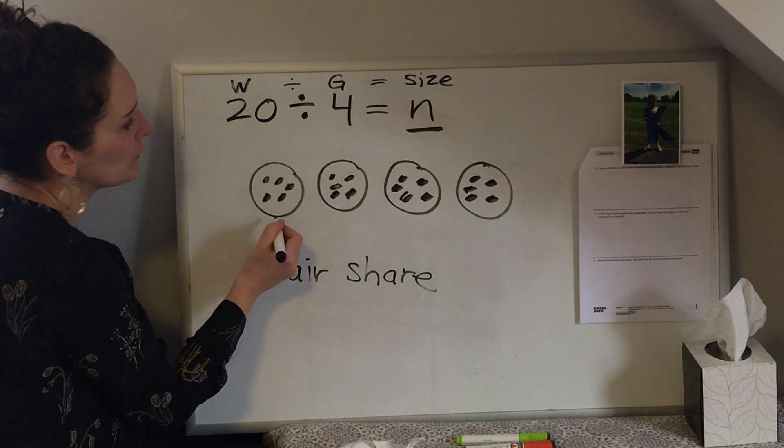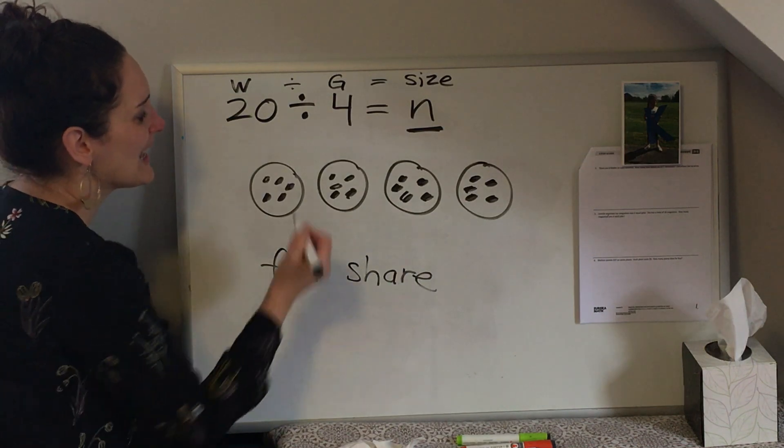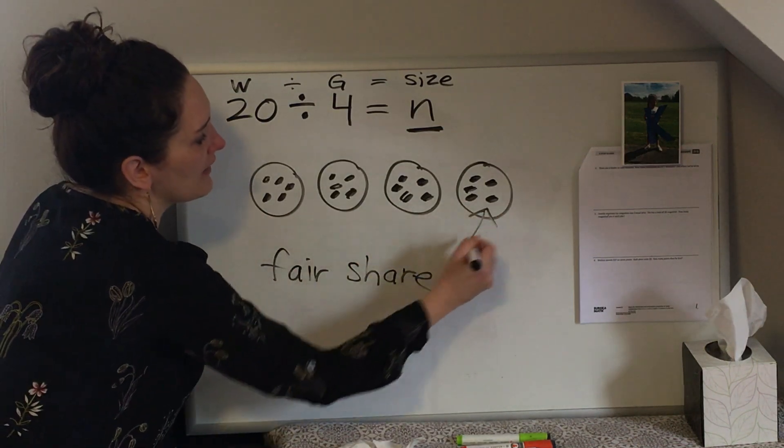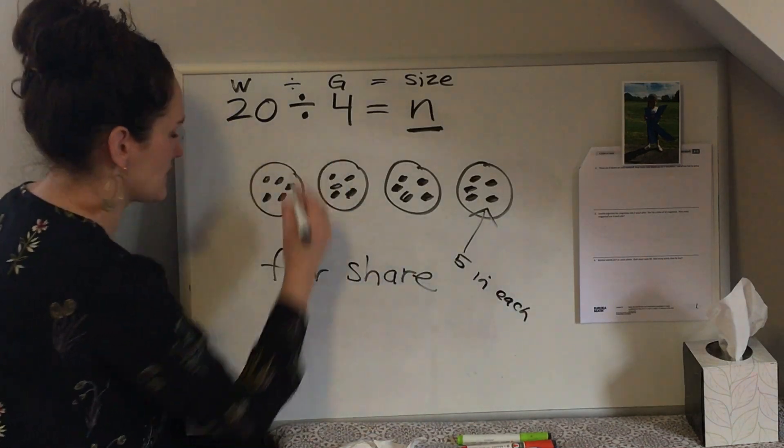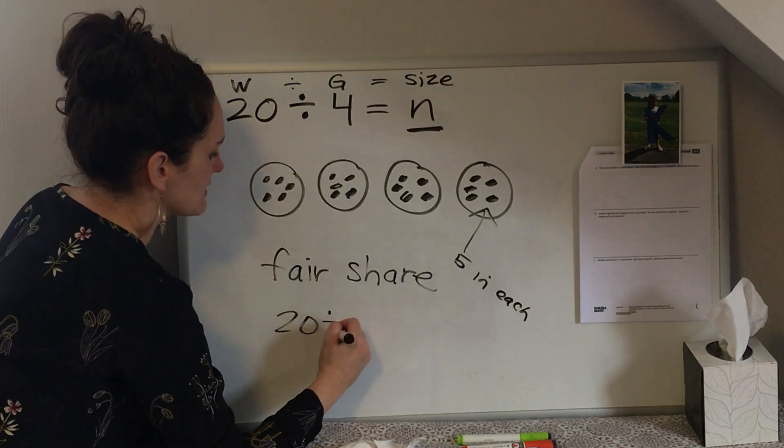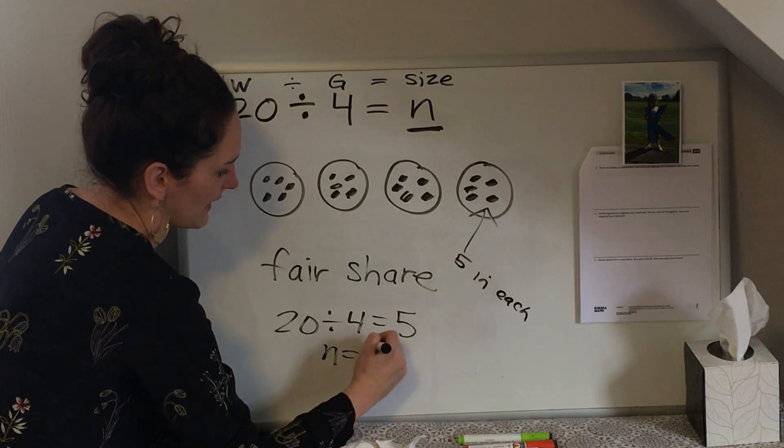I took 20 total pieces of candy, divided them into four bags or four groups, and I found that there are five in each group. So the answer to this problem would be 20 divided by 4 equals 5. So n equals 5.